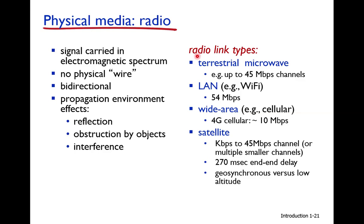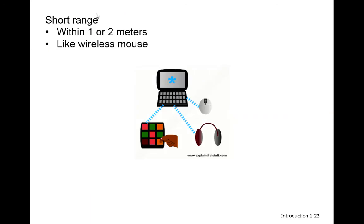The wireless or radio link can be of different types: for example, LAN Wi-Fi technology supporting up to 54 Mbps, terrestrial microwave, wide-area cellular networks like the mobile phone network, and satellite communication. One type is short-range wireless, used within one to two meters — for example, a wireless mouse, wireless pad, or wireless headphones.